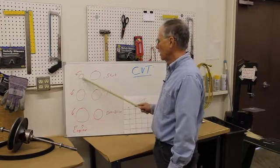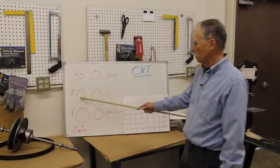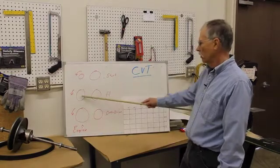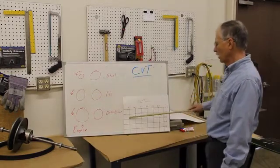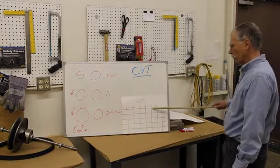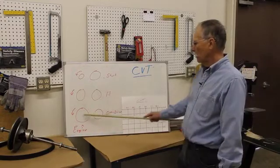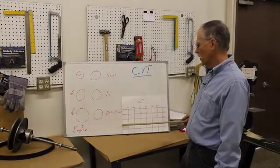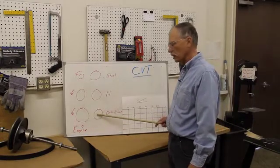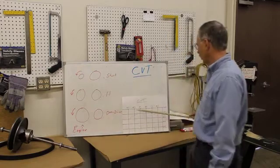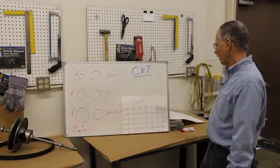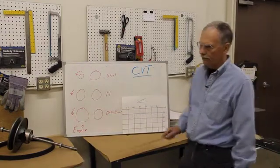Now as the RPM goes up, the front sheave grows in radius, the back sheave diminishes in radius. So eventually it will get to a one-to-one ratio as it shifts through the ratio ranges. And they will eventually, on some of the models, go into overdrive. That's where the front sheave is larger than the rear sheave, and you get an overdrive condition. Here would be one-to-one. This would be a 0.75 to one overdrive condition.